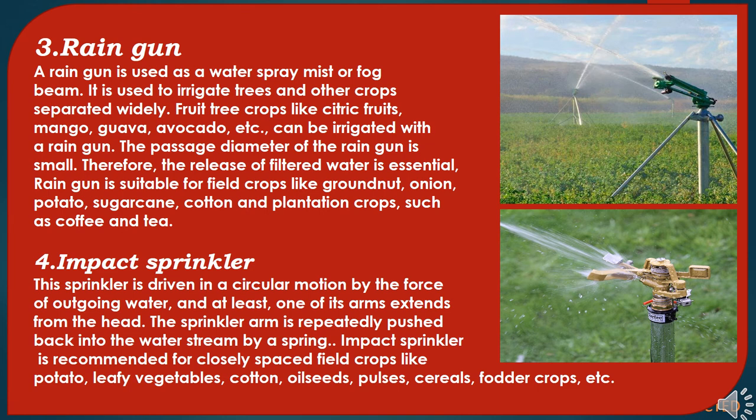The third type of sprinkler irrigation is the rain gun. A rain gun is used as a water spray, mist, or fog beam. It is used to irrigate trees and other widely-spaced crops. Fruit tree crops like citrus fruits, mango, guava, and avocado can be irrigated with a rain gun. The passage diameter of the rain gun is small, so the release of filtered water is essential. Rain gun is suitable for field crops like groundnut, onion, potato, sugarcane, cotton, and plantation crops such as coffee and tea.